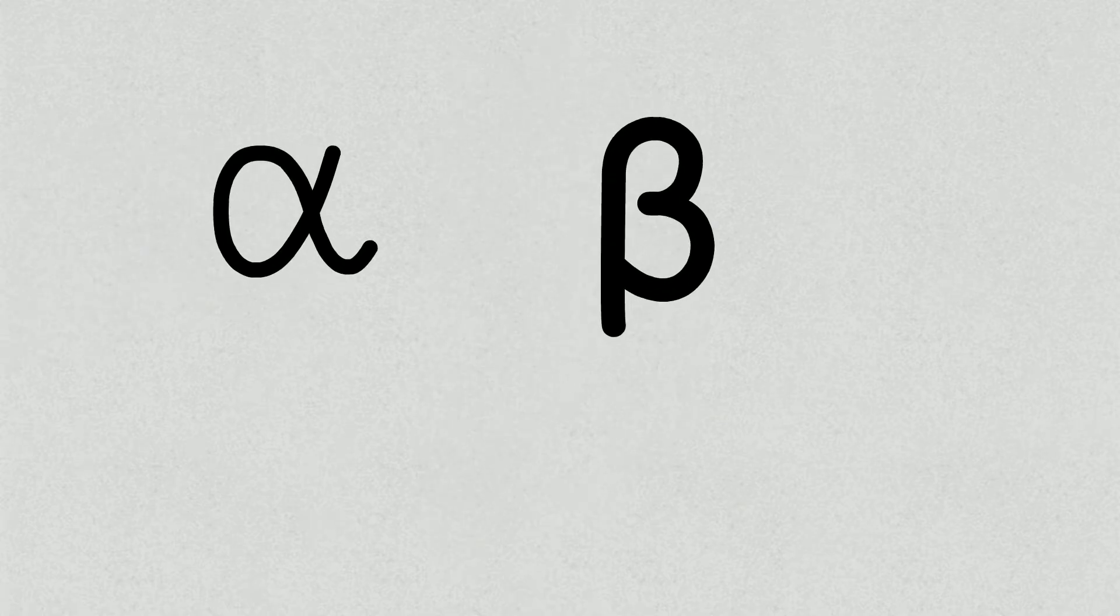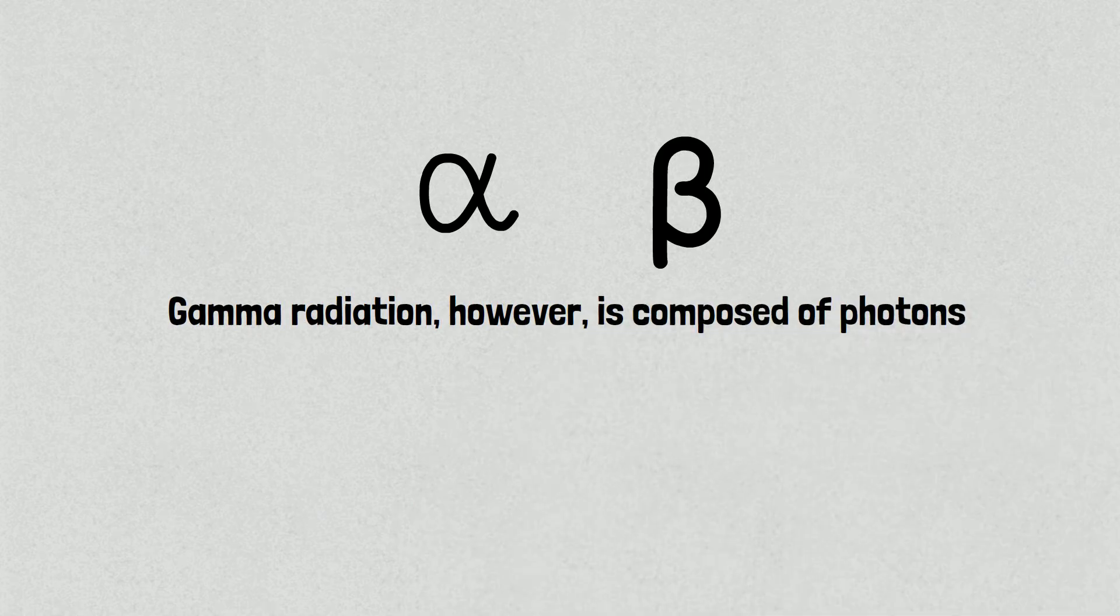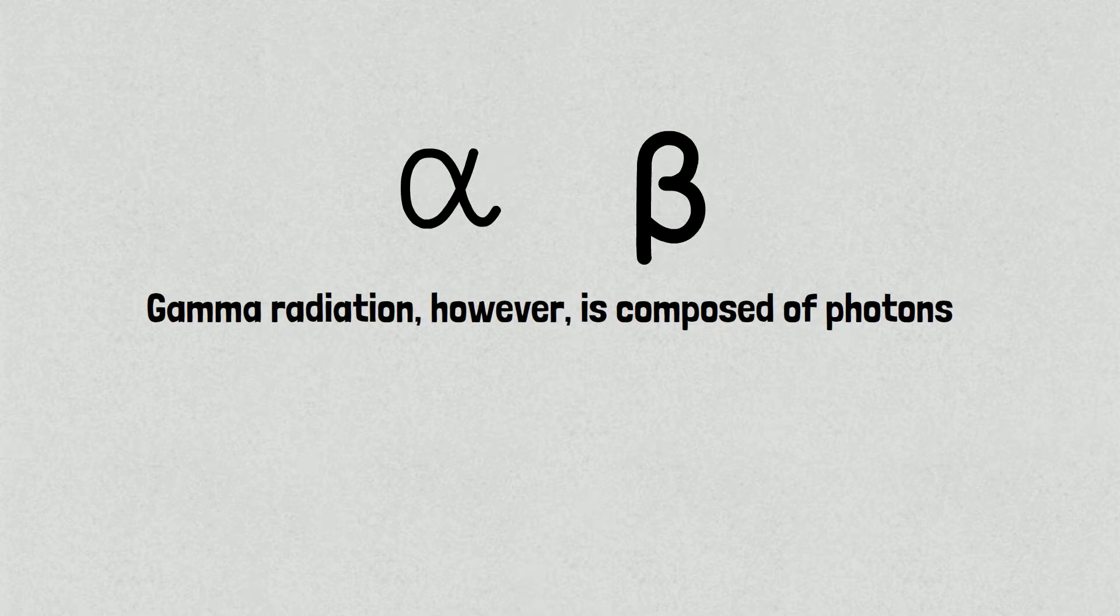Gamma radiation, however, is composed of photons which have neither mass nor electric charge, and as a result penetrates much further through matter than either alpha or beta radiation.